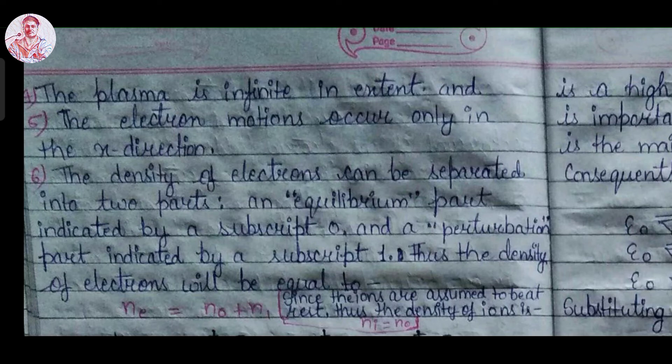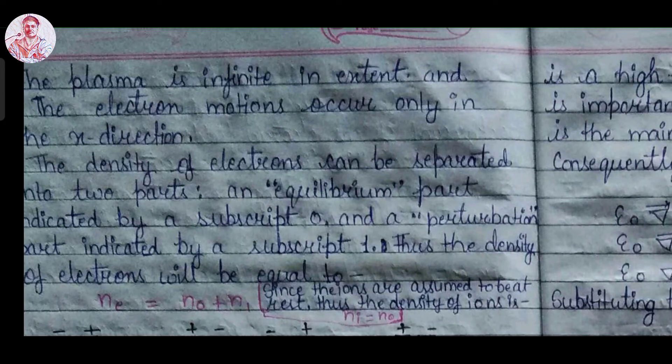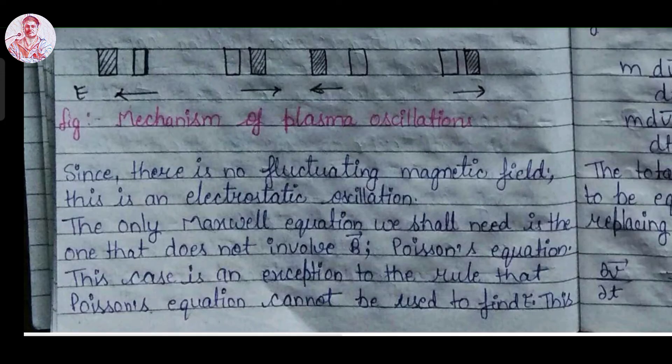The sixth assumption is that the density of the electron can be separated into two parts: an equilibrium part indicated by subscript 0, and a perturbation part indicated by subscript 1. Thus the electron density is N_e = N_0 + N_1. Since the ions are assumed to be at rest, the ion density at equilibrium will be N_i = N_0. Since there is no fluctuating magnetic field as assumed, this is only an electrostatic oscillation. The only Maxwell equation we shall need is the one that does not involve the magnetic field vector B.